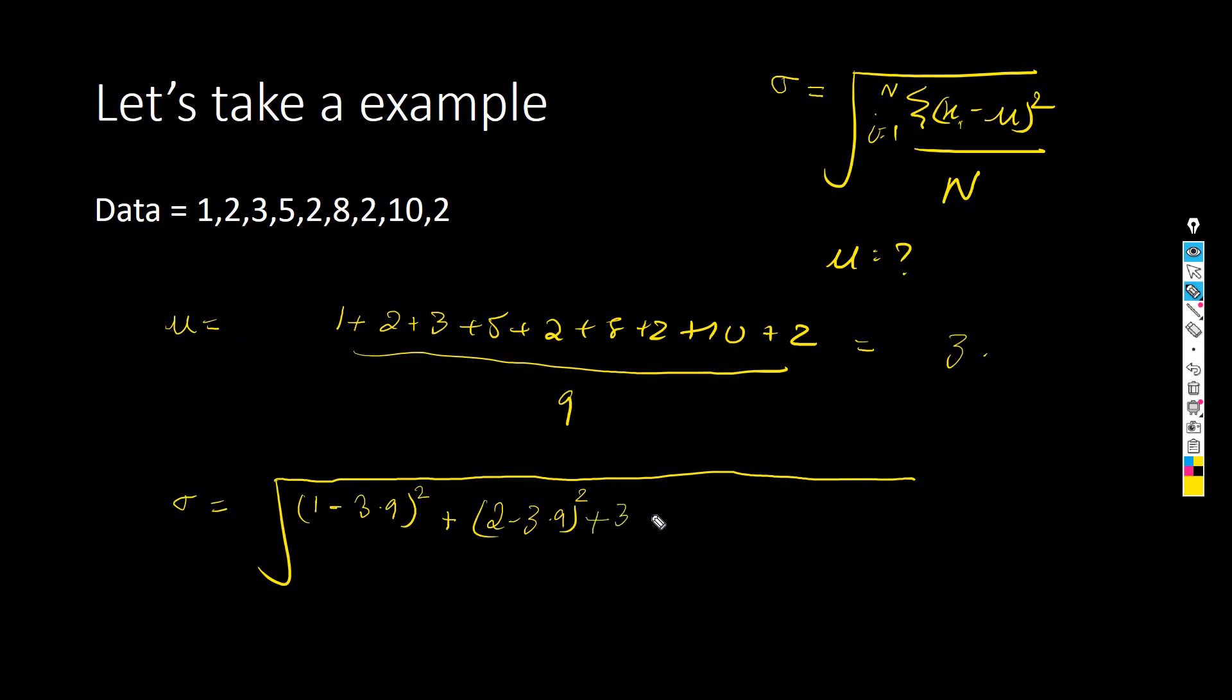Then for 3, 3 minus 3.9 whole square, then 5 minus 3.9 whole square, 2 minus 3.9 whole square, and for all the data sets till this 2.